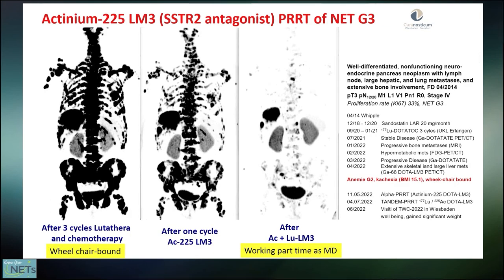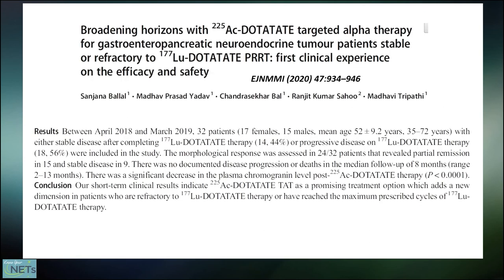This is a dramatic case — actually a wheelchair-bound patient from Sudan who was a colleague and had been previously treated with chemotherapy and lutetium at the university hospital in Germany, but failed treatment with severe progression. After one cycle of actinium and even more pronounced after the combination of actinium and lutetium, he had a very good response, went from wheelchair-bound to working part-time again as a medical doctor, and was even able to visit our World Congress last year here in Wiesbaden.